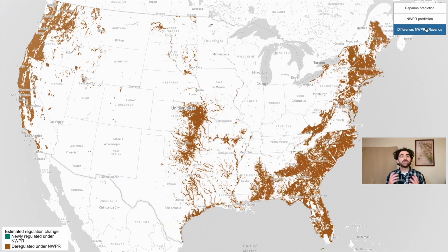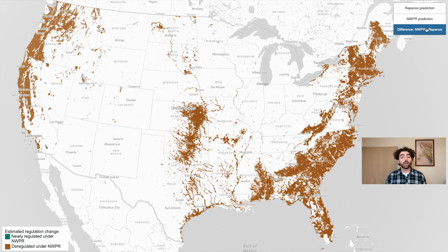The difference button shows where regulation changed between the two rules. Brown points are deregulated under NWPR, and green points are newly regulated under the rule.